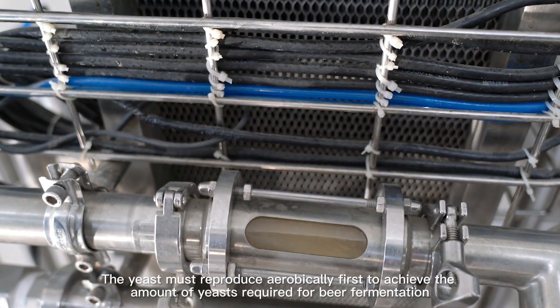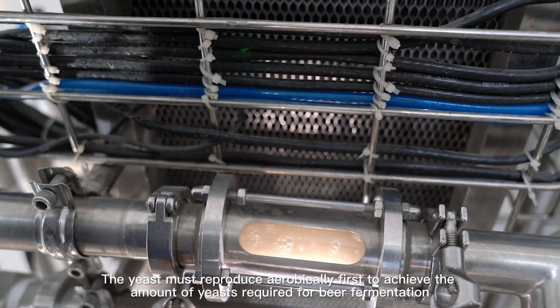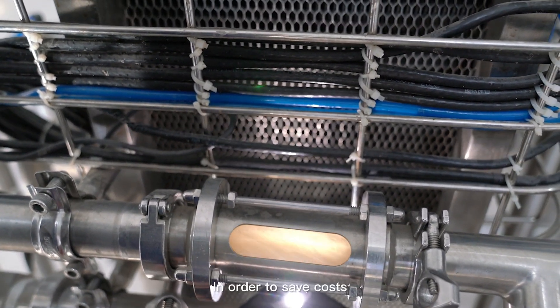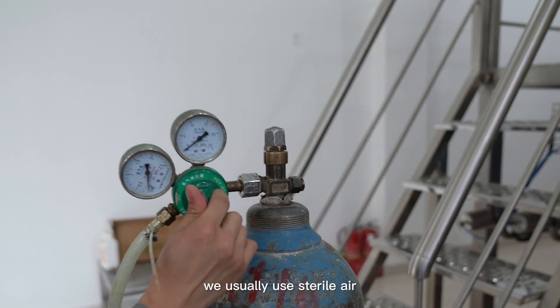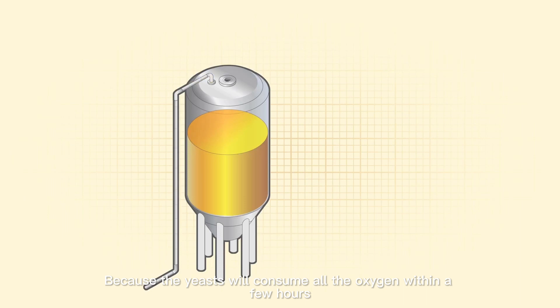Let the yeast reproduce aerobically first to achieve the amount of yeast required for beer fermentation. In order to save costs, we generally use sterile air. We don't have to worry about oxygen damage to wort quality because the yeast will run out of oxygen within a few hours.